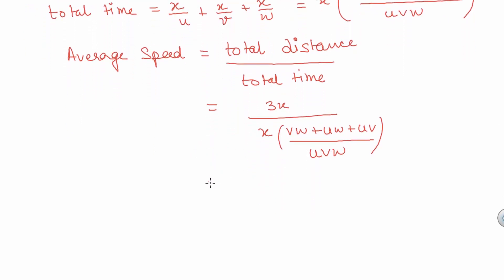Solving it, we get 3uvw divided by vw plus uw plus uv, which is the required answer.